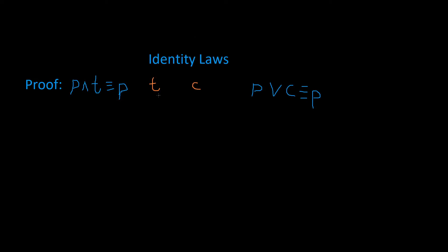We're going to prove the identity law. This is known as our tautology. This is our contradiction. And so we have P AND T is logically equivalent to P. What's the first thing we need to do? We need to write out our statement variables — these are statement variables, but taken in place of our normal statement variables.